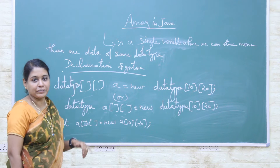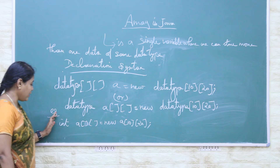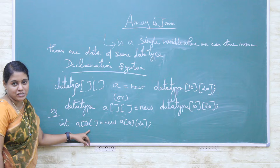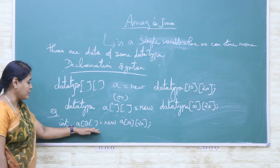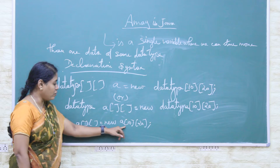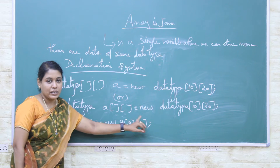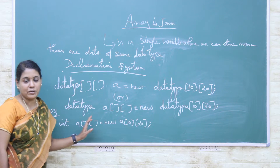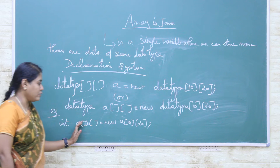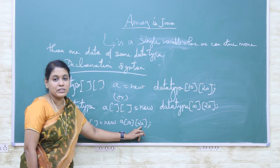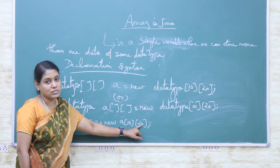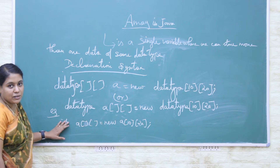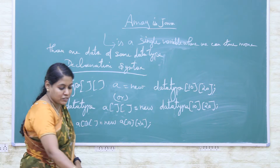Let's see an example. 'int A[][]' — here I have used two subscripts, meaning this is a two-dimensional array. So: 'int[][] A = new int[10][20];'. Here 10 means 10 data items are stored row-wise in the variable A, and 20 means 20 data items are stored column-wise in the variable A. This is the example of declaring a multi-dimensional array.